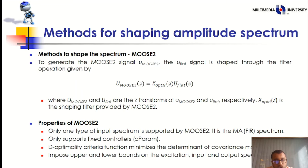Method to shape the spectrum MOOSE2. To generate MOOSE2 signal, a flat signal is shaped through the filter operation based on below equation. U MOOSE2 and U flat are the Z-transform of U MOOSE2 and U flat. Respectively, U of Z is the shaping filter provided by the MOOSE2. The MOOSE2 toolbox are available in frequency domain identification toolbox in MATLAB. Properties of MOOSE2. One type of input spectrum is supported by MOOSE2. It is a spectrum-only supported fixed controller. The optimal criteria function minimizes the determinant of covariant matrix. It enforces a lower bound in the excitation input and output spectrum.